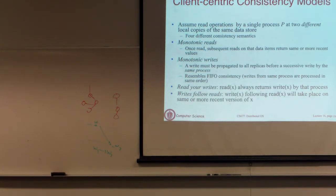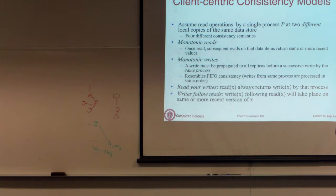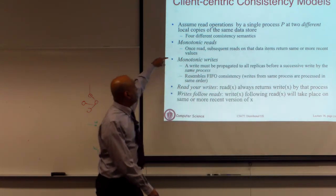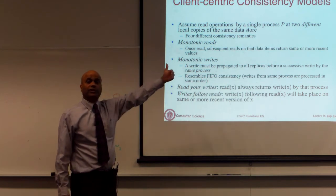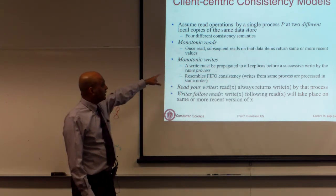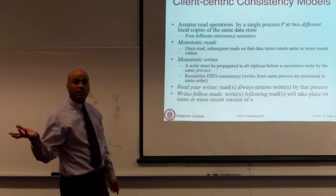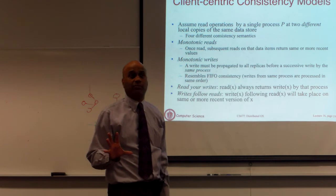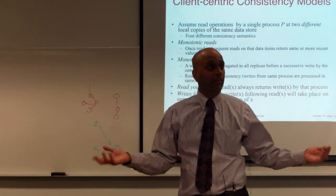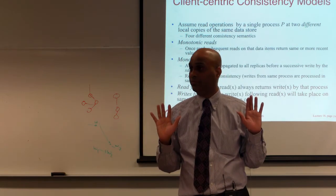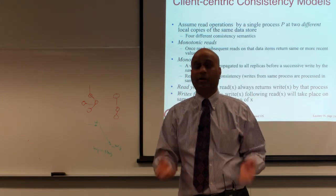Client-centric consistency models say: regardless of what internal consistency model you have, if you start seeing a version of data, you should see that data or newer data when you go to any other location — not older data. Monotonic read says once you read a value, you should see something as new or newer. Monotonic write says that if you made a change, that change must propagate everywhere before another write. These are all client-centric consistency models that reason about what the client sees from the system, which from a user's perspective may be more important than what is happening internally.